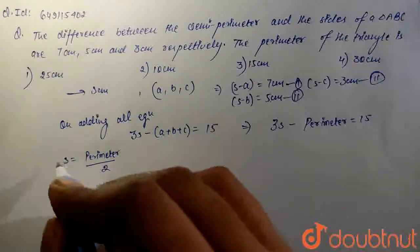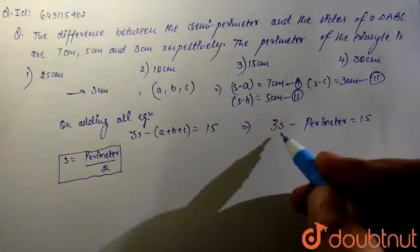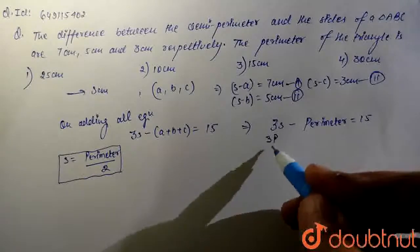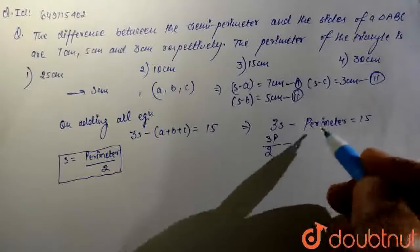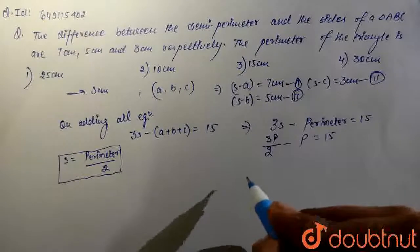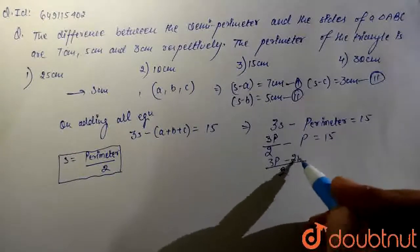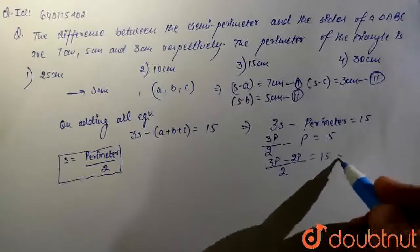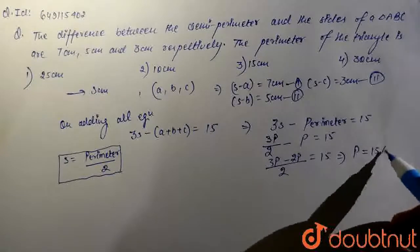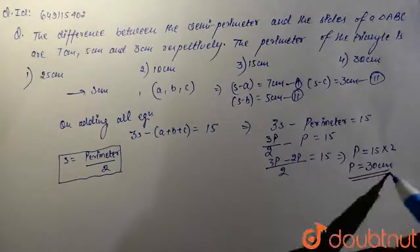In place of S, we write perimeter divided by 2. Let's say perimeter is P. So 3 times (P/2) minus P equals 15. Taking 2 as LCM, we get 3P minus 2P equals 15 into 2, which gives P equals 30 centimeters.